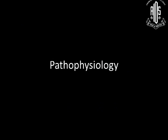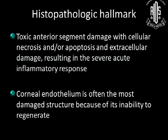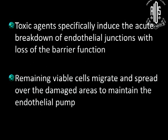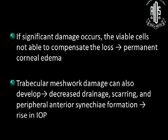Now let's come to the pathophysiology. The pathological hallmark is toxic anterior segment damage with cellular necrosis and/or apoptosis and extracellular damage resulting in severe acute inflammatory response. Corneal endothelium is often the most damaged structure because of its inability to regenerate. Toxic agents specifically induce the acute breakdown of endothelial junctions with loss of barrier function. Remaining viable cells migrate and spread over the damaged areas to maintain the endothelial pump, but if significant damage occurs, the viable cells are not able to compensate for the loss and there is permanent corneal edema.